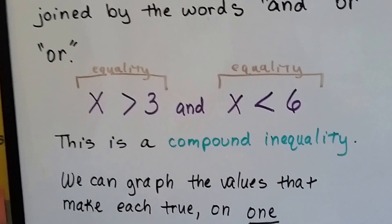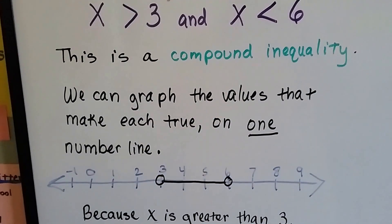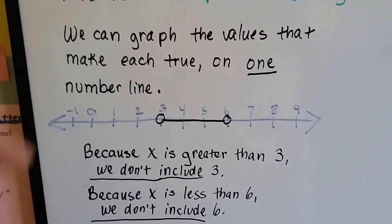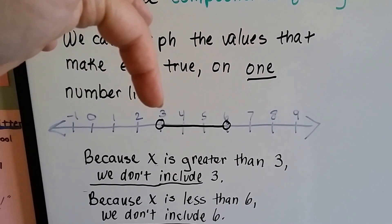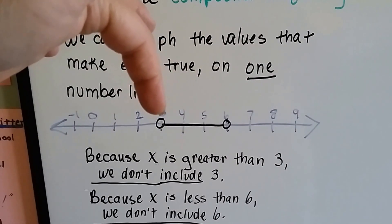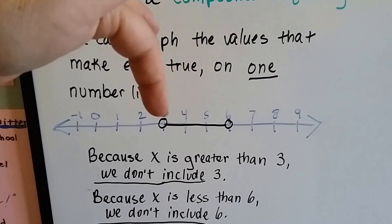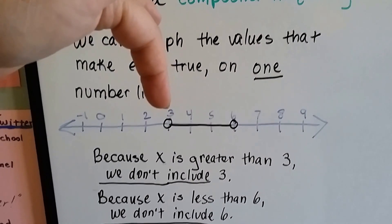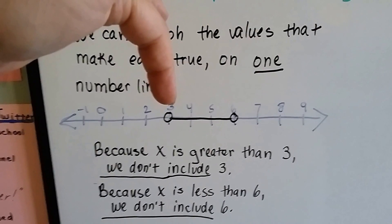It's a compound inequality. We can graph the values that make each one true on one number line. Because X is greater than 3, it doesn't include 3, so we put a circle to show that it's an open set. It doesn't include the 3.